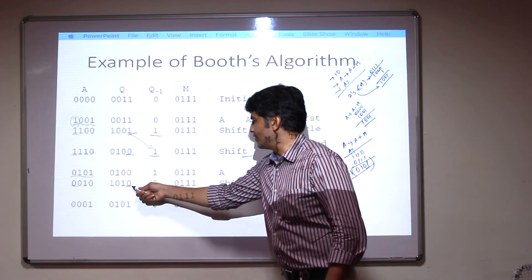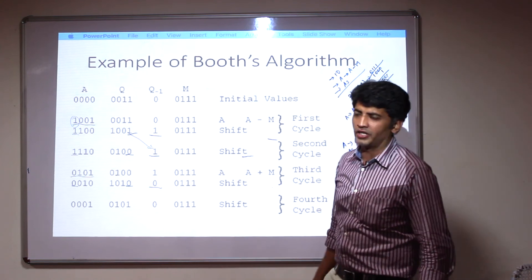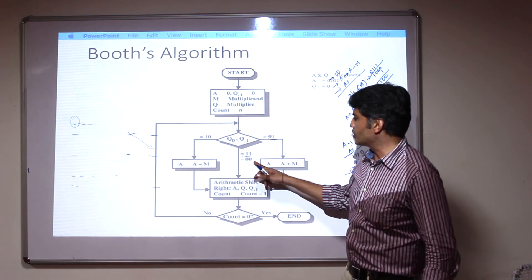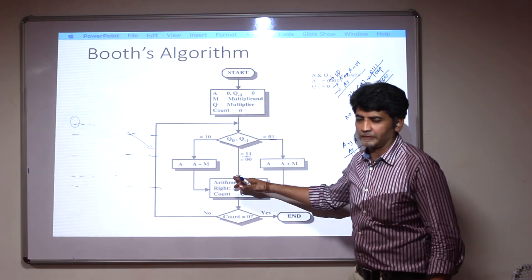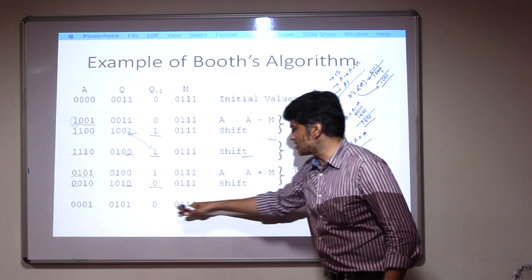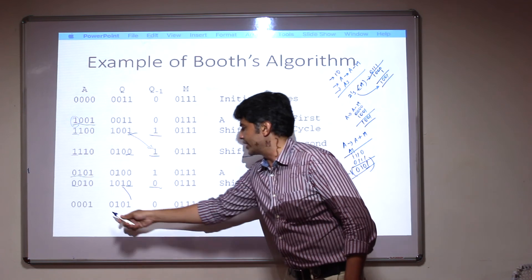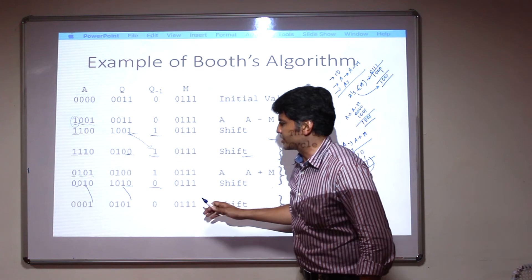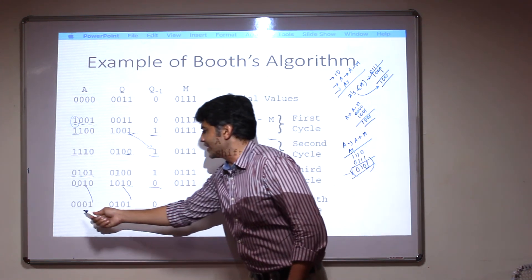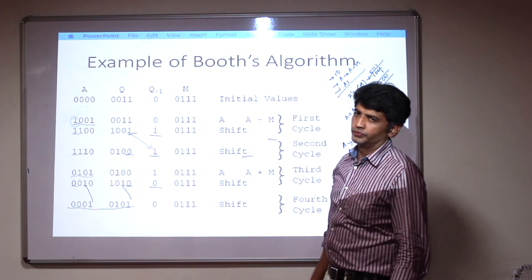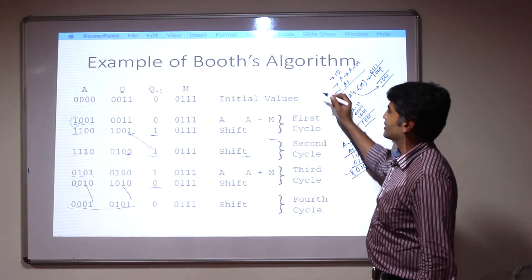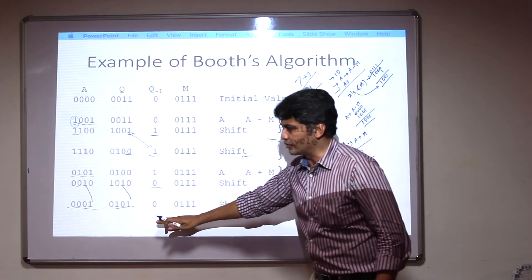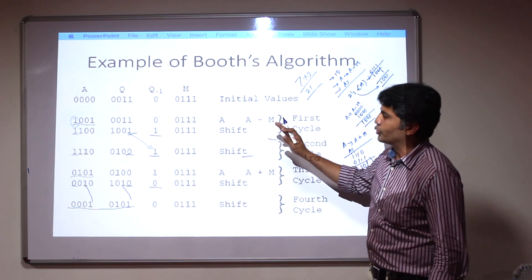Again, we verify what is the value of Q0 and Q-minus-1. Both values are 0,0. Checking the flowchart: if the values are 0,0, you only need to do the arithmetic shift. Arithmetic shift is done in this last step — the 1 is moving here, shifting to the right side. This is the end of the result. You get the result in A and Q. This is the result for 7 times 3: you will get the value of 21. This is how Booth's algorithm works.